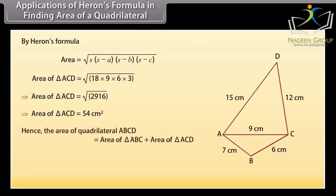Hence, the area of quadrilateral ABCD = area of triangle ABC + area of triangle ACD = 20.98 + 54. Therefore, the area of quadrilateral ABCD = 74.98 cm².